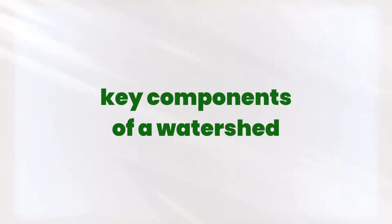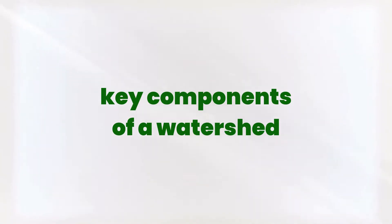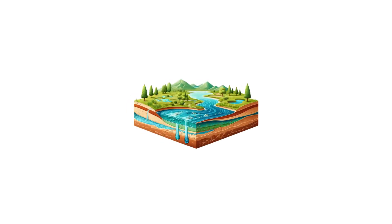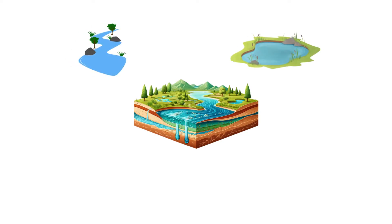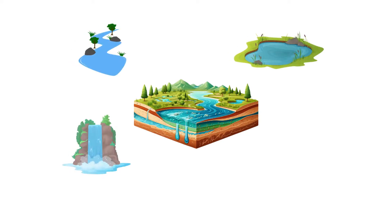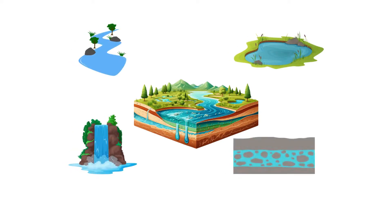Now, let's look at the key components of a watershed. Water — this includes all forms of water bodies within the watershed, such as rivers, lakes, streams, and groundwater.